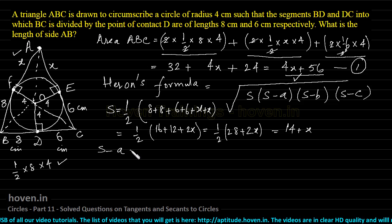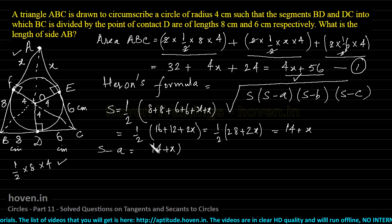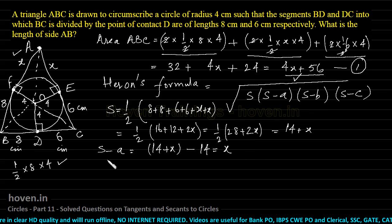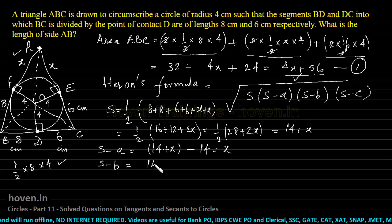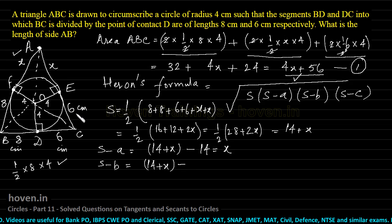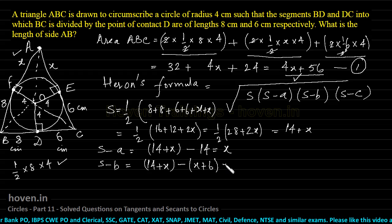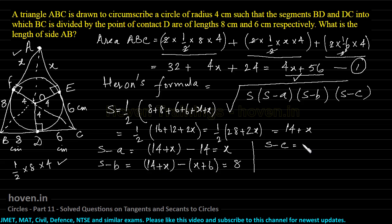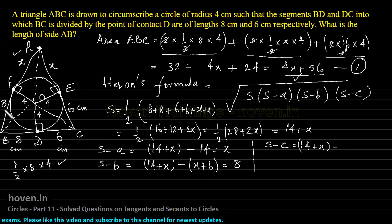Now computing each factor: s − a = (14 + x) − 14 = x; s − b = (14 + x) − (x + 6) = 8; s − c = (14 + x) − (8 + x) = 6. So the four factors under the square root are (14 + x), x, 8, and 6.